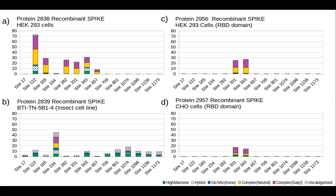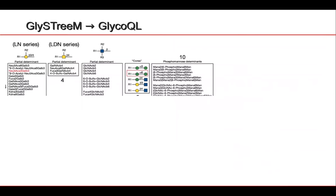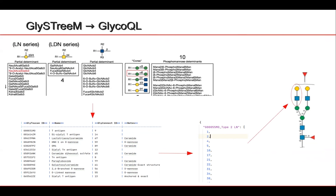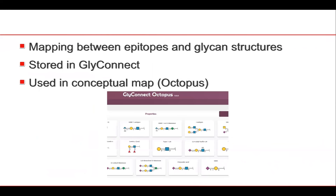The next step was to take this method and apply it to a well-known list of epitopes published in 2009. Using our algorithm, we generated SPARQL queries, used them to query GlyStream, and generated a mapping between each epitope and our structures. We saved this mapping and use it in our conceptual map tool, Octopus, where you can search directly for any of these substructures.